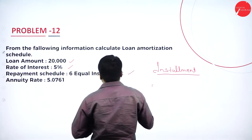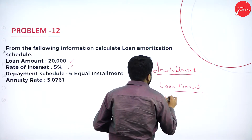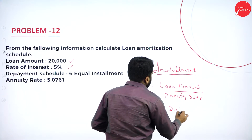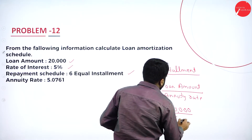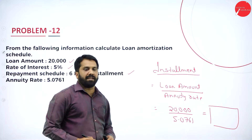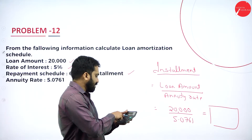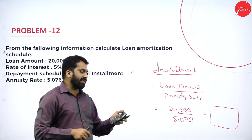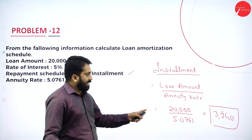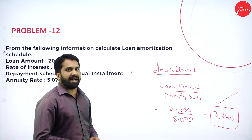To calculate the installment, the formula is: installment = loan amount divided by annuity rate. The loan amount is 20,000 divided by the annuity rate of 5.0761. Using the calculator, 20,000 divided by 5.0761 gives 3,940. So your every-year installment amount is 3,940, which includes both your principal as well as interest.